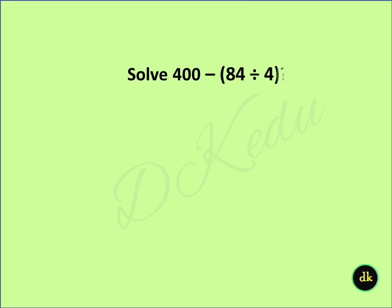Solve: 400 minus (84 divided by 4). Answer: 379.